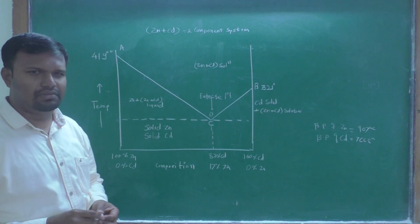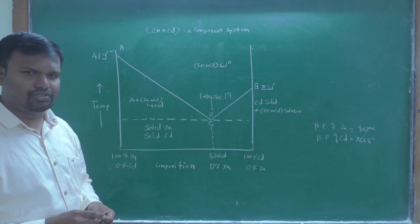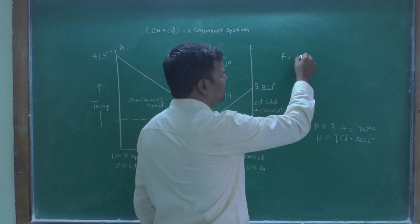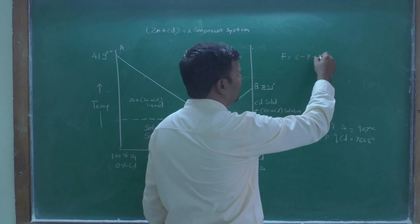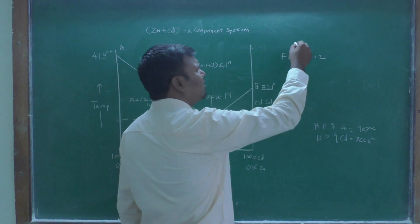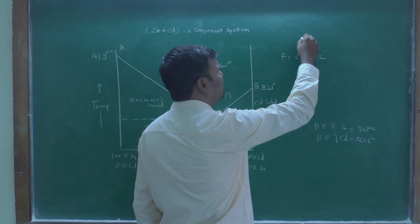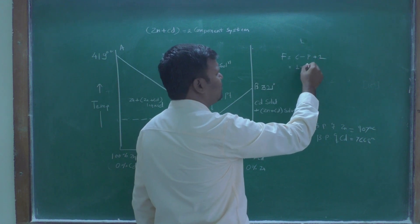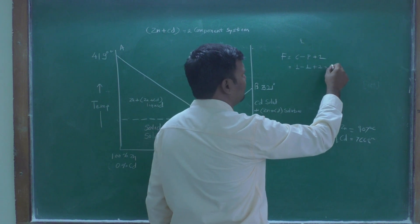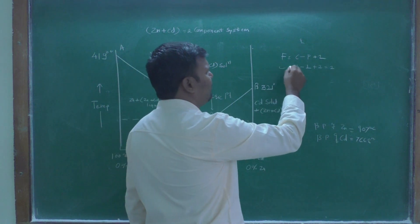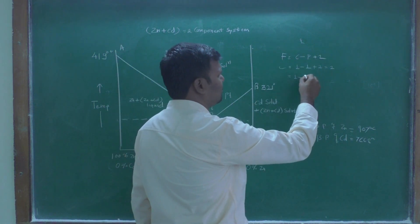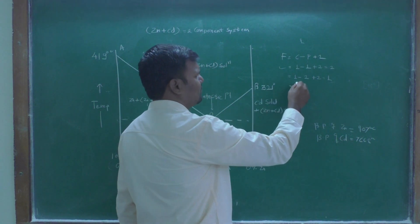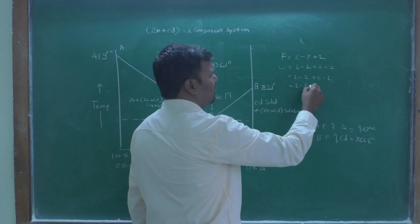Dear students, today we will discuss two-component systems. The formula for degree of freedom is F = C - P + 2. For a one-component system (C=1) with one phase (P=1), the degree of freedom is two. If phases equal two, degree of freedom is one. If phases equal three, degree of freedom is zero.